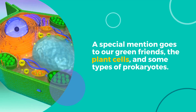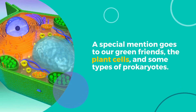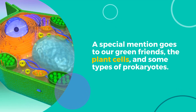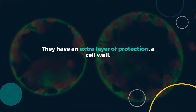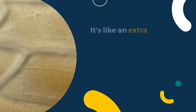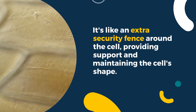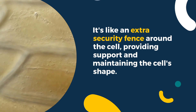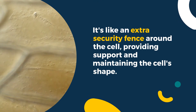A special mention goes to our green friends — plant cells and some types of prokaryotes. They have an extra layer of protection: a cell wall. It's like an extra security fence around the cell, providing support and maintaining the cell's shape.